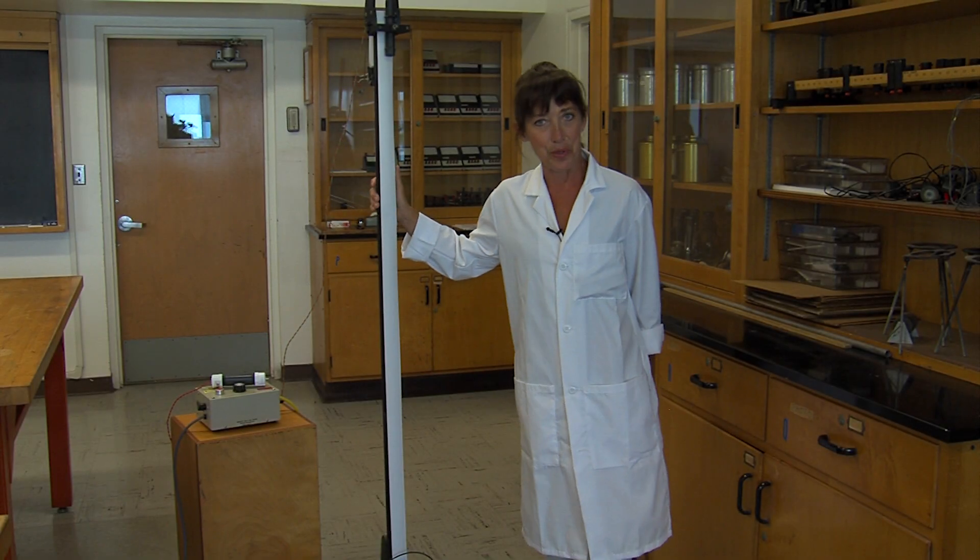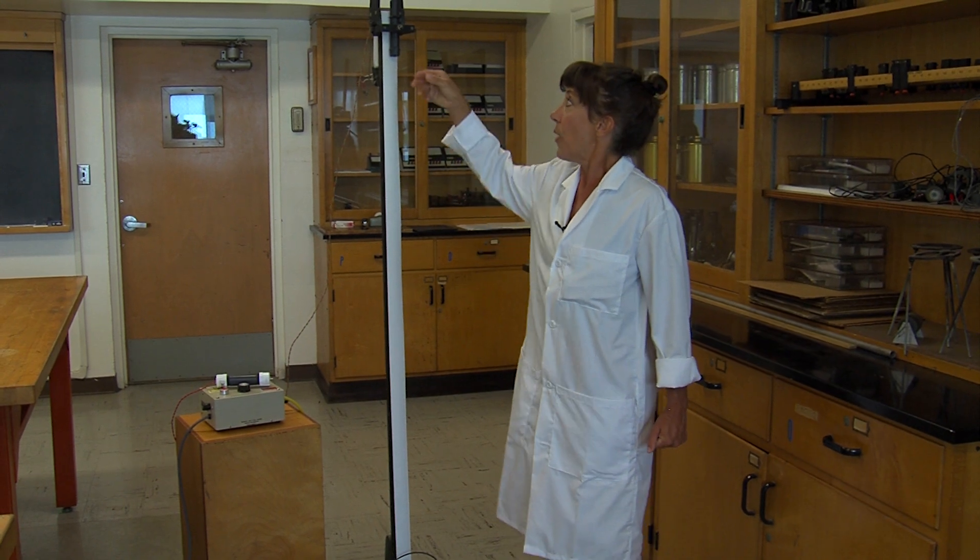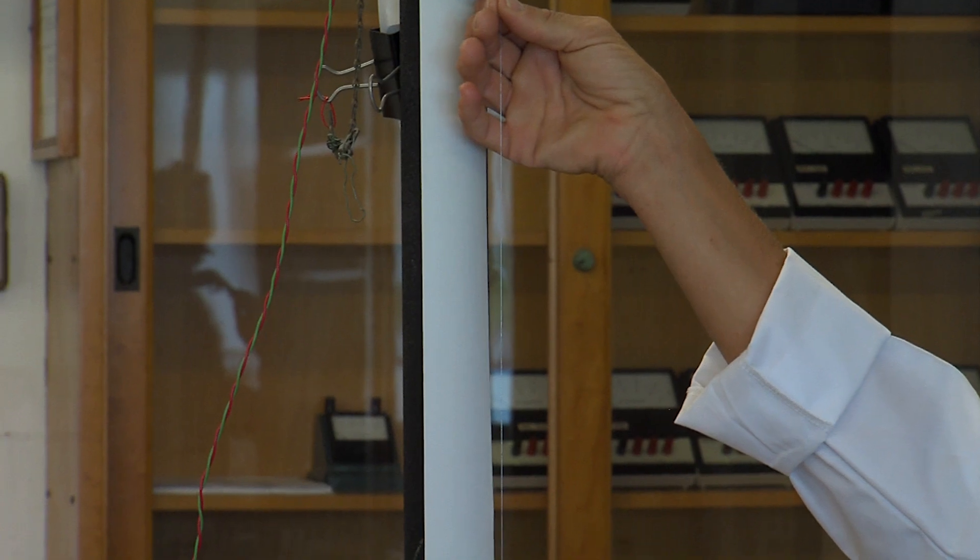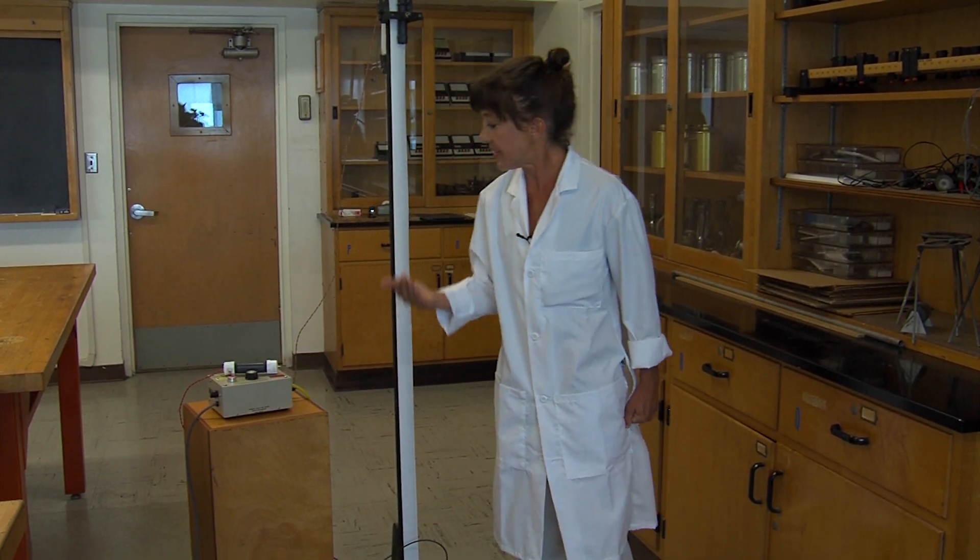Let's begin, shall we? The apparatus we'll be using today is a tall stand upon which we've mounted a ticker tape. The ticker tape is made such that each time a small force is applied, it leaves a mark on it. We have a conducting wire suspended from the top to the bottom, which is connected to this sparking device here, which sends an electric pulse through it every 1/60th of a second.